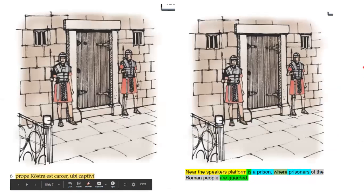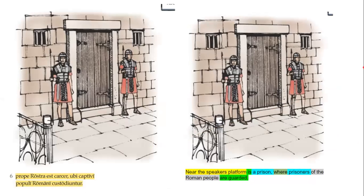'Prope rostra' — again, accusative plus 'prope' — near the rostrum 'est carcer' — is the jail — 'ubi captivi populi Romani custodiuntur' — where the captives, nominative plural 'captivi,' of the Roman people, 'populi Romani' genitive, 'custodiuntur' — are guarded.